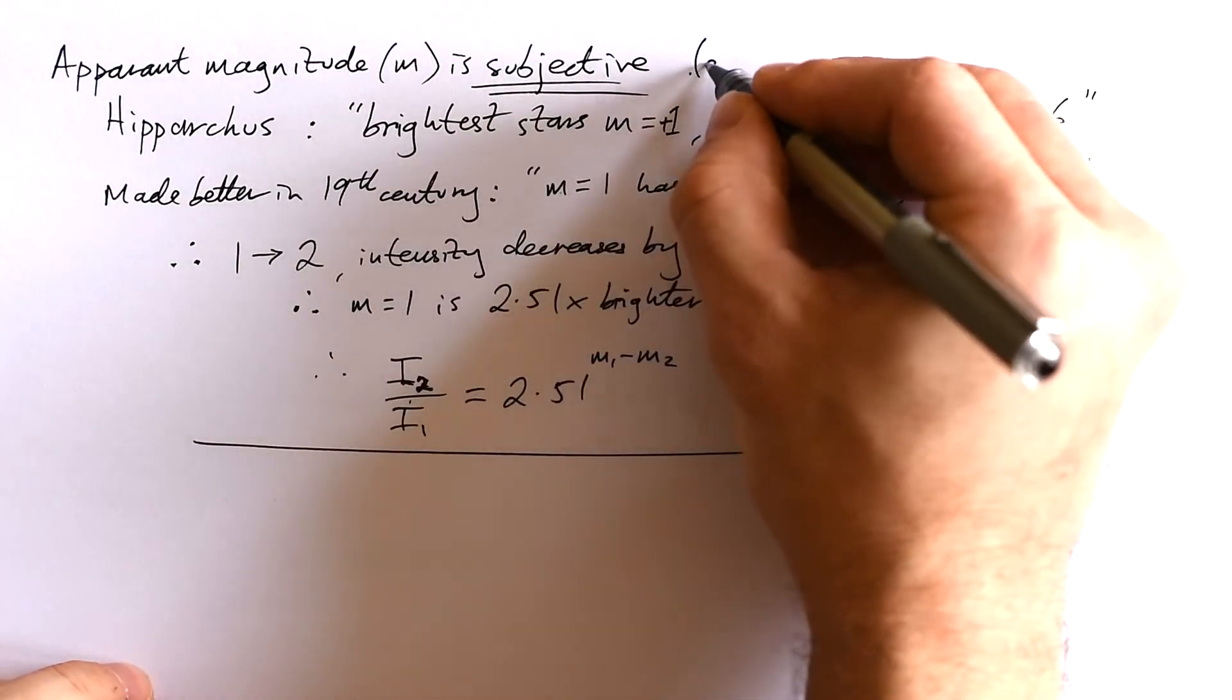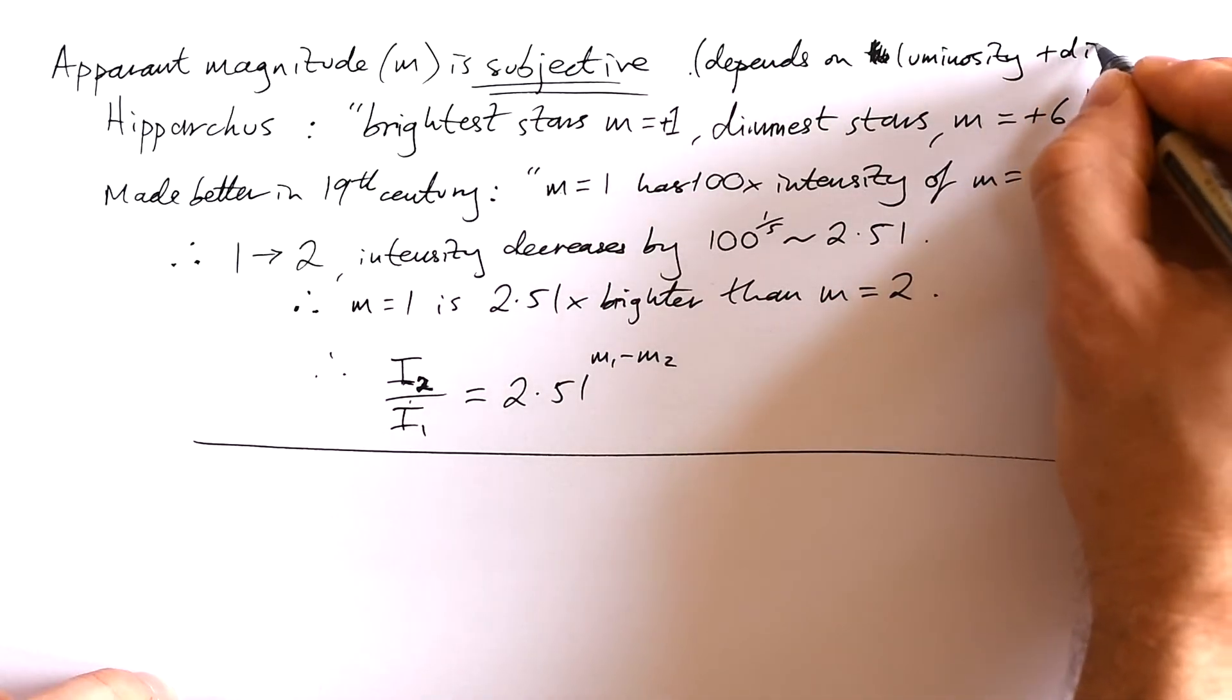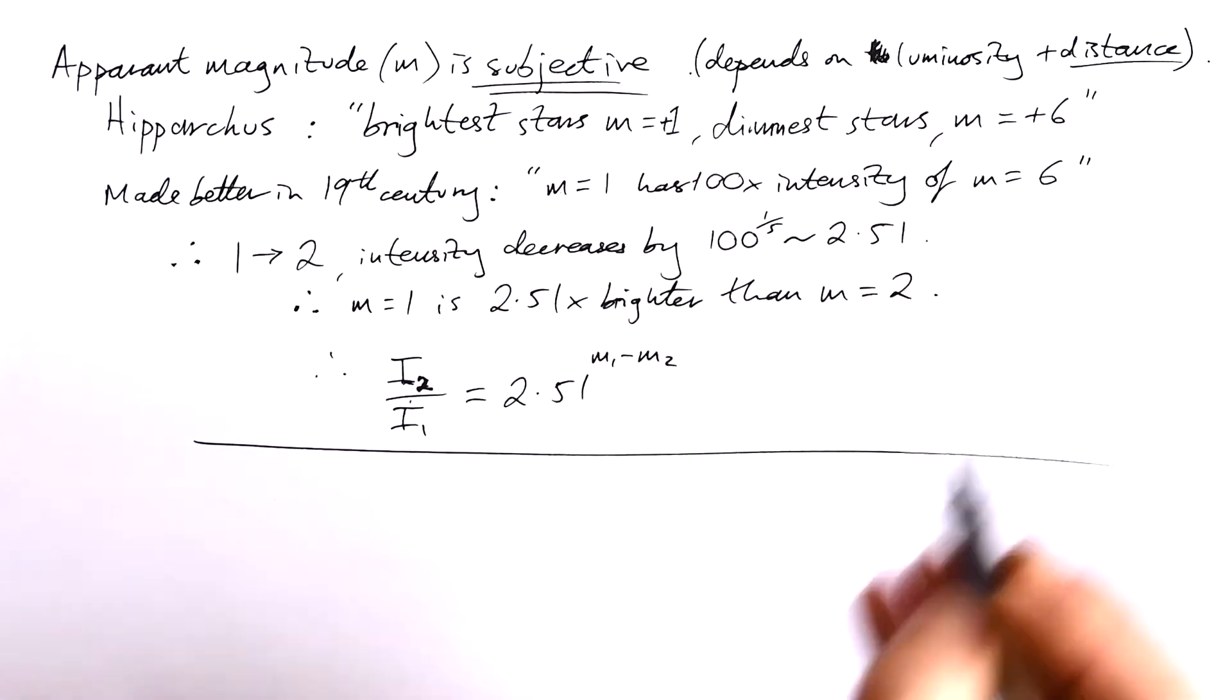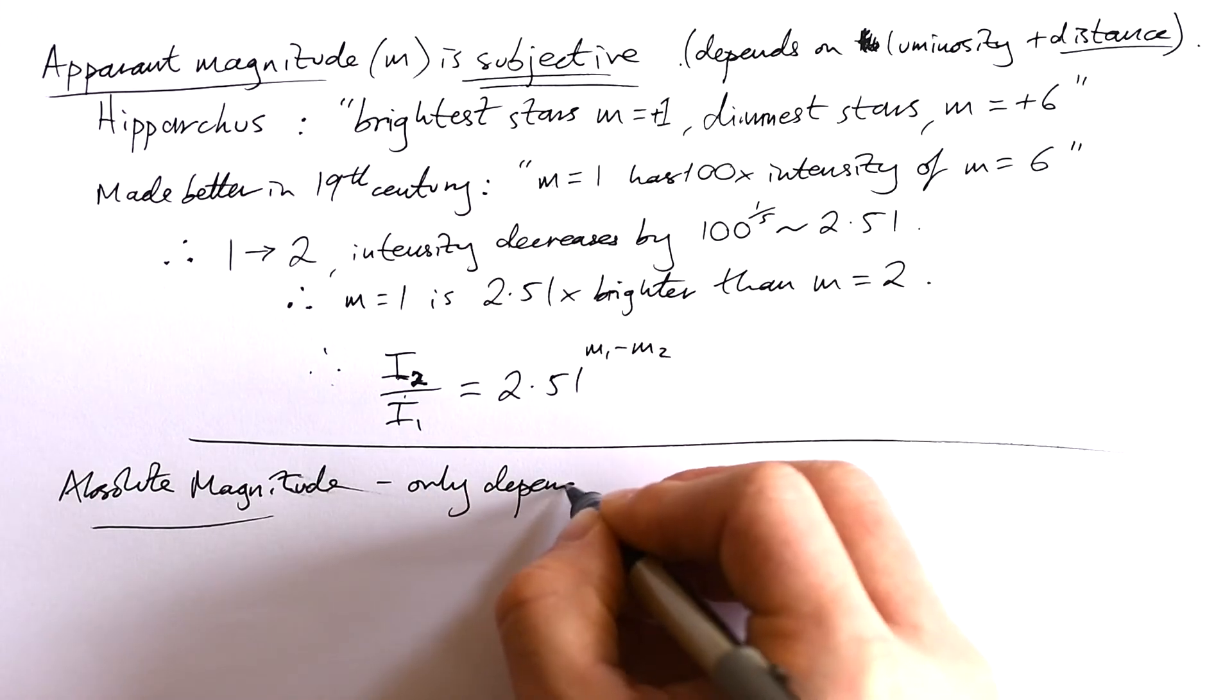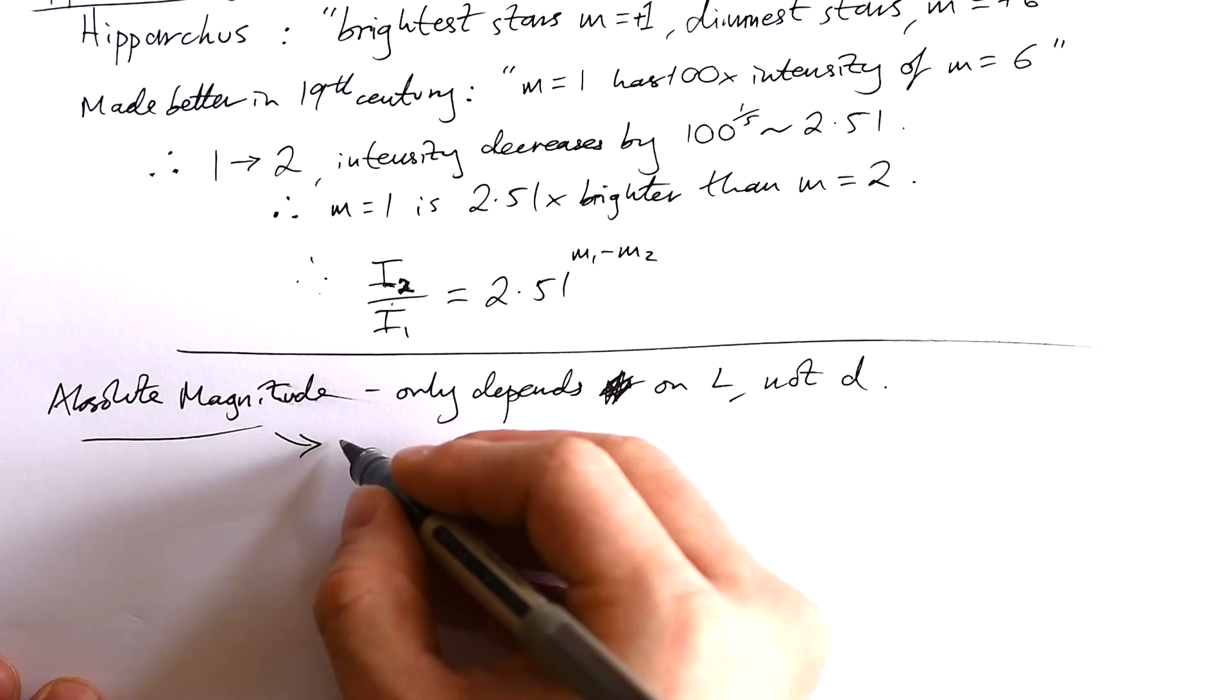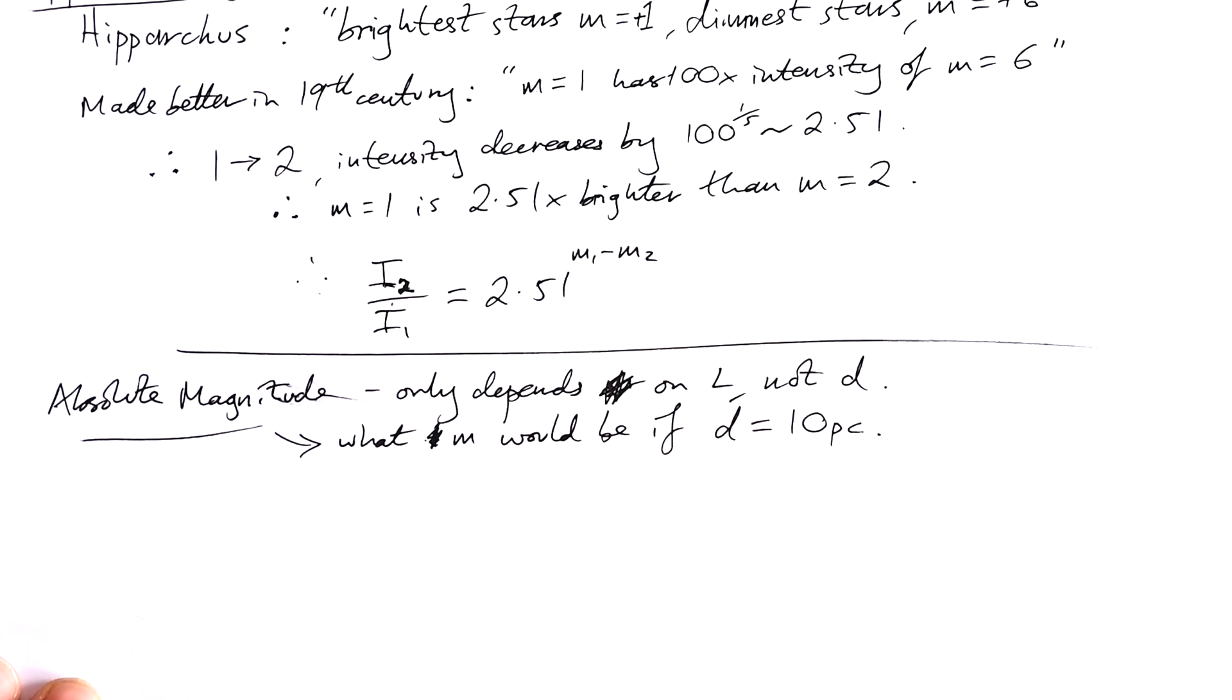This depends on a star's luminosity, how much power it's giving out, and its distance from us, because both affect how bright a star appears. To take distance out of the equation, they came up with absolute magnitude, which only depends on luminosity. It tells you what the apparent magnitude would be if the star's distance was 10 parsecs.